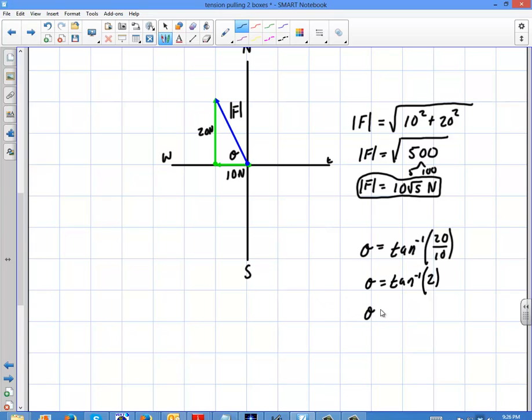And so that's just going to give me theta equals 63.43 degrees. And where is that reference point going to be? Well, it's going to be north of west.